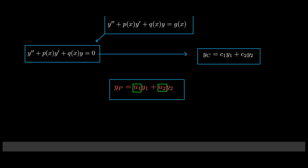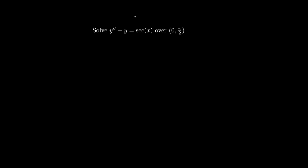Let's solve a particular example to see how this method works. Here is a differential equation; we're asked to solve it over a given interval. We need to consider the associated homogeneous equation, which is y double prime plus y equals zero. To solve this, we consider the auxiliary equation, and here we get complex roots plus or minus i.